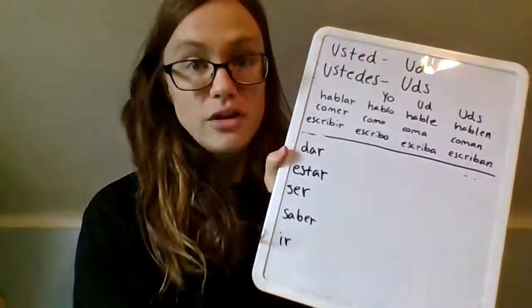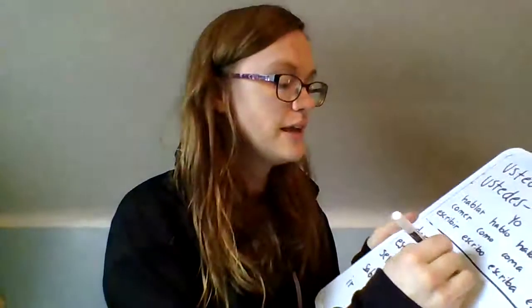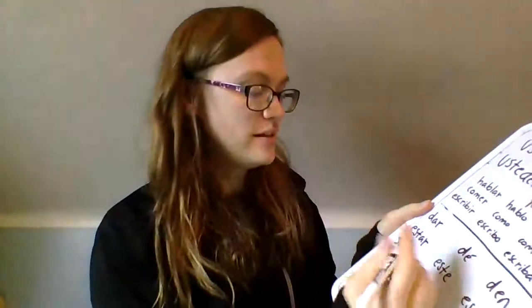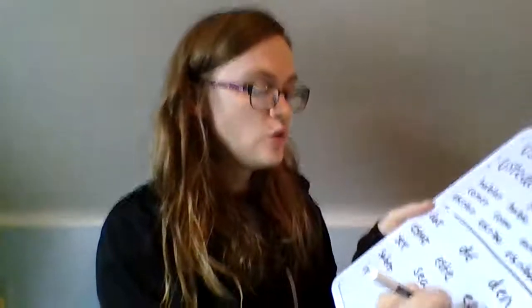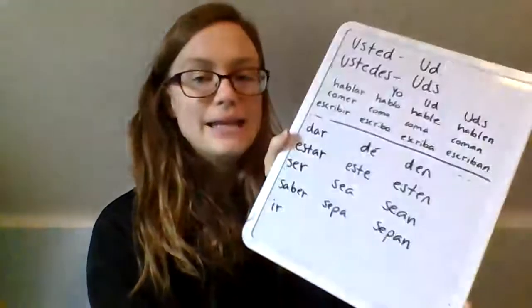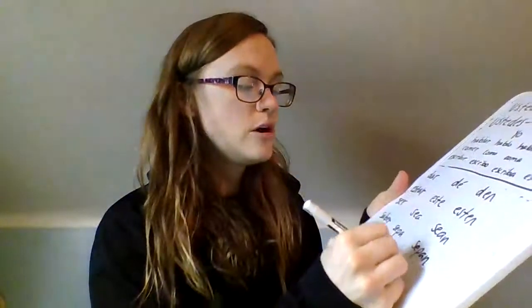There are more irregulars — the truly irregular verbs this chapter. We have dar (to give), estar (to be — emotions), ser (to be — physical characteristics), saber (to know), and ir (to go). They are all irregular. Dar: dé / den. Estar: esté / estén. Ser: sea / sean. Saber: sepa / sepan. Ir: vayan.